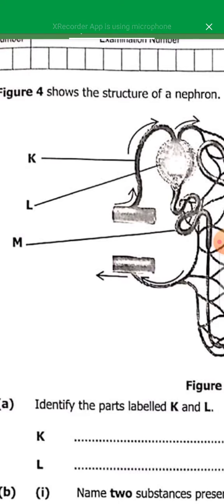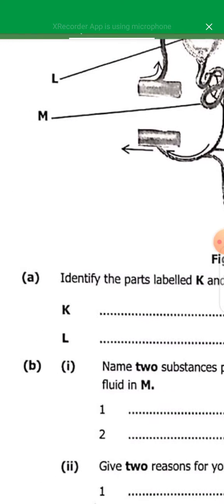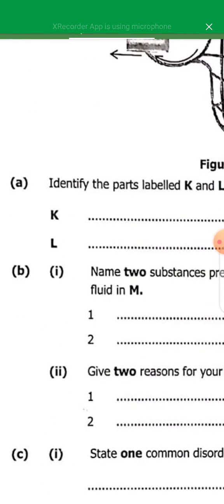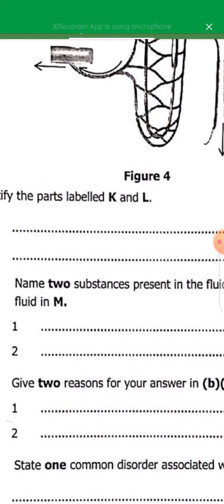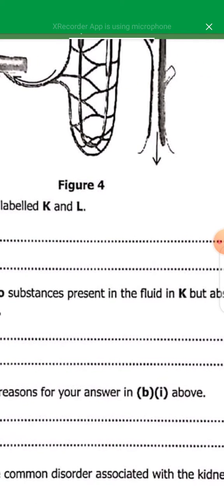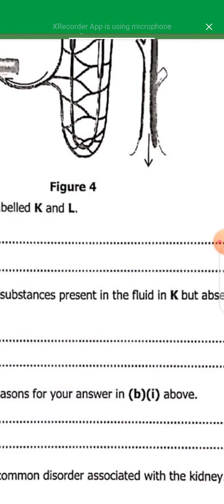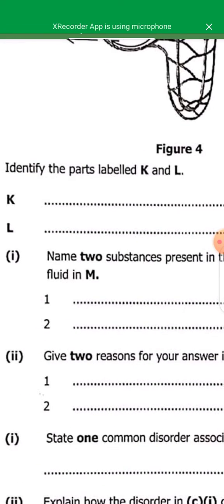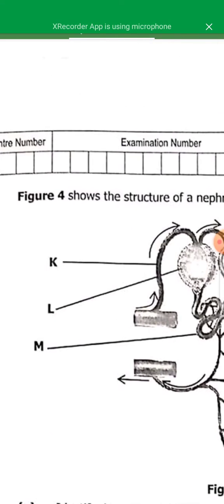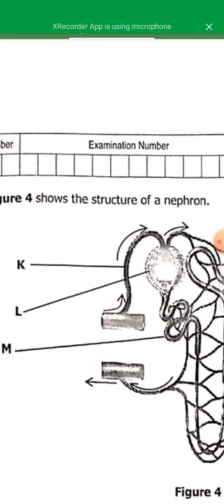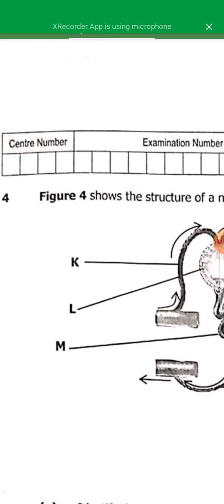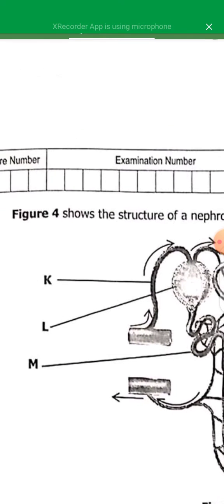So this is where selective filtration occurs. Question B1 says, name two substances present in fluid in K but absent from the fluid in M. So it is present in fluid K but absent from fluid in M. So the blood that is coming from here has got small and large molecules.